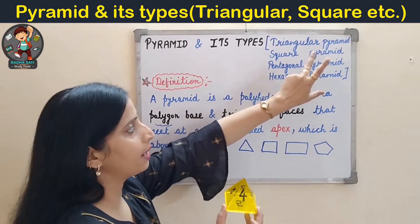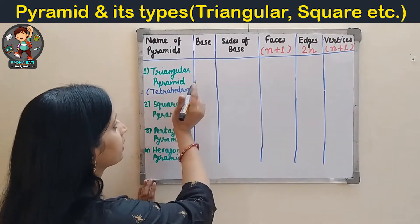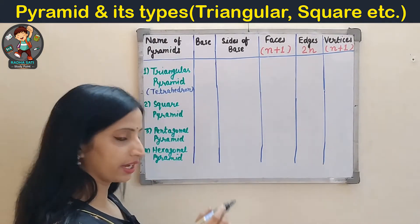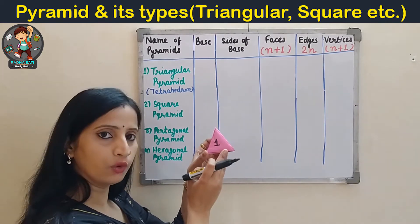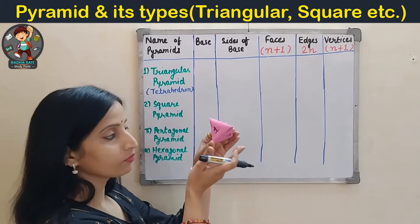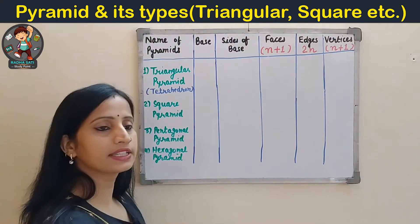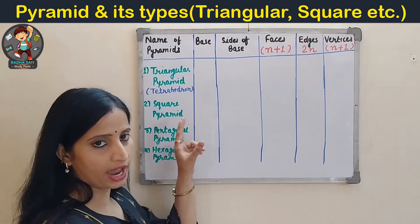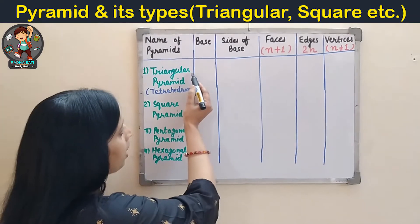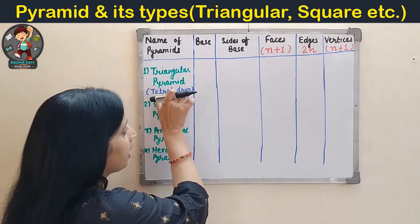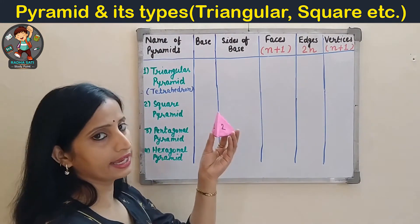In this video I will discuss the faces, edges and vertices of different types of pyramids — triangular, square, pentagonal and hexagonal. The name of a pyramid always depends on its base. So if the base is a triangle, it is known as a triangular pyramid. If the base is a square, it is a square pyramid, and so on. Here the base is a triangle, so it is a triangular pyramid, also known as a tetrahedron. Now let us count the number of faces, edges and vertices in this pyramid.